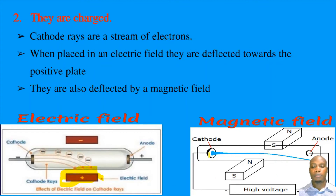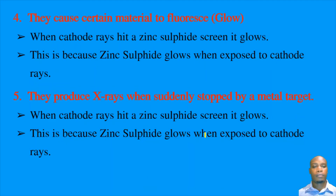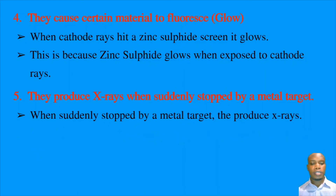If exposed to a magnetic field, cathode rays are deflected in accordance with Fleming's left-hand rule, where the first finger shows the field from north to south, the second finger shows the direction of current, and the thumb shows the direction of deflection. The fourth property is that cathode rays can cause certain materials to fluoresce or glow — for example, zinc sulfide glows when cathode rays fall on it. The fifth property is that they produce X-rays when suddenly stopped by a metal target.